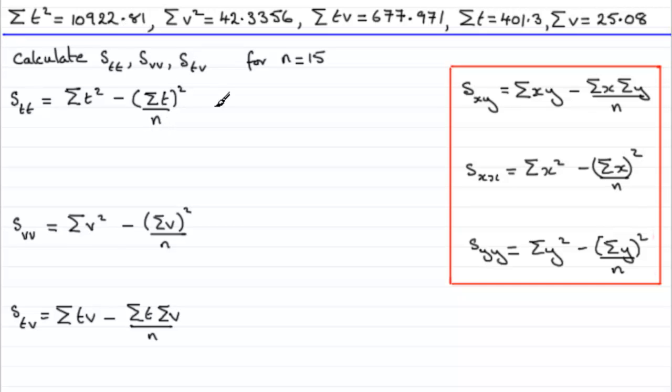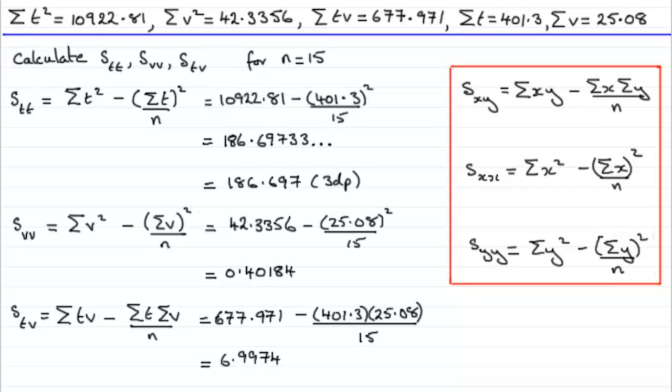And as I say, n, the number of observations, was 15 we were told. So if you fill those values in, that's what you're going to get. So to save time, I've just worked them out. You can check them through on your calculator. Okay, well that's essentially the first part of this question.